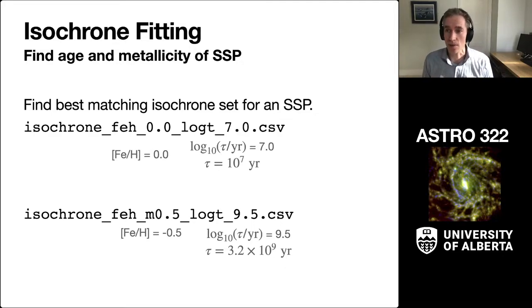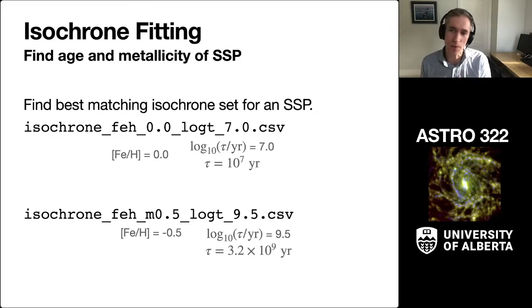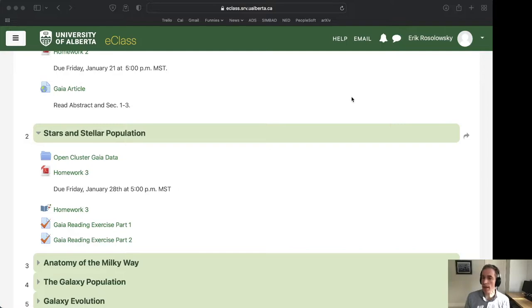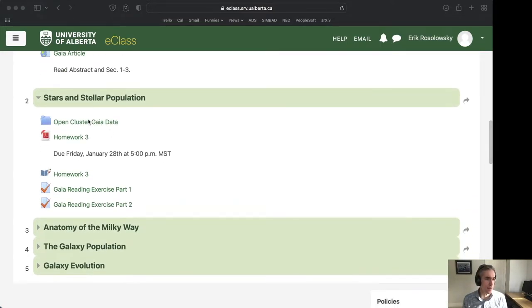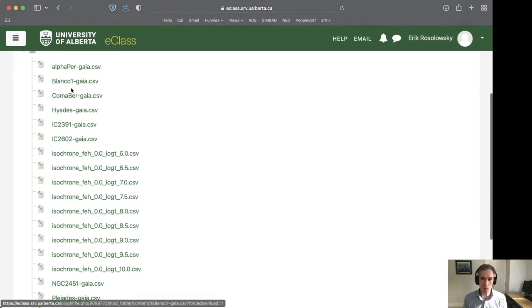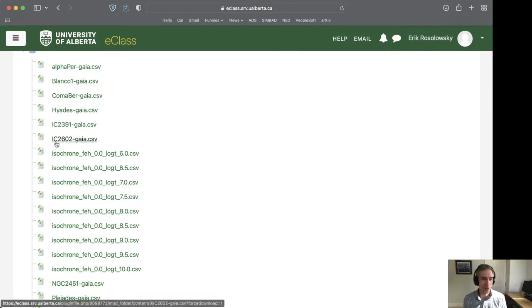In the E-Class data, there are files called isochrone Fe 0 log t of 7.0.csv — just data files that represent the isochrones for a simple stellar population. Fe means Fe on H, or the iron metallicity, so Fe 0.0 is 0.0, and log t is the age. You can find these on E-Class in the open cluster Gaia data. We have a bunch of open clusters derived from the same paper that you're looking at, and then a bunch of these isochrones. If you're going to grab one and follow along, grab the 9.0.